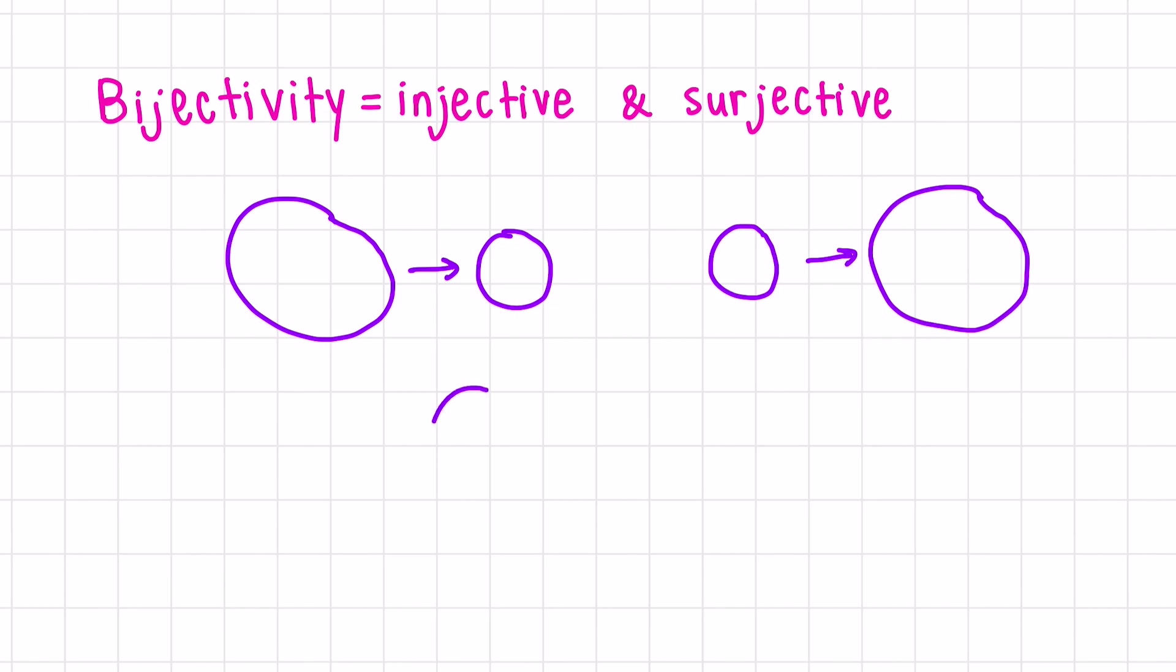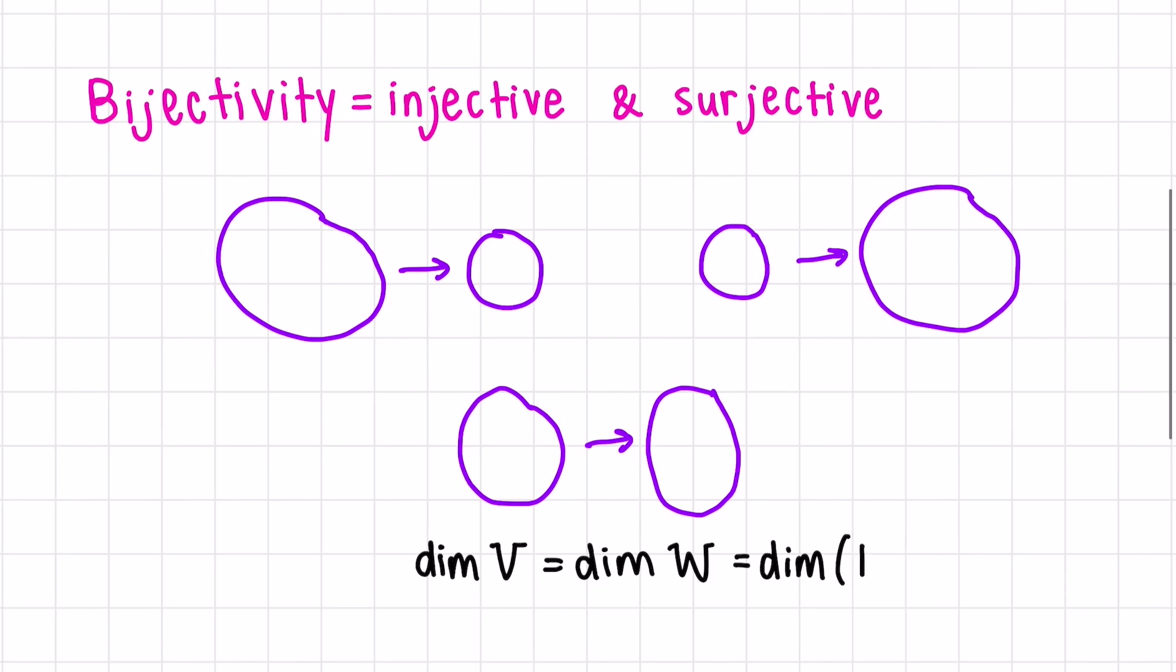So in order to have both surjectivity and injectivity, both the domain and the codomain have to have the same dimension, which equals the dimension of the image of the transformation, or T(V). The transformed V equals the whole space. Matrix-wise, this would look like a square matrix, because a square matrix means if it's N by N, we're going from RN to RN, with a leading one in every single row and column.